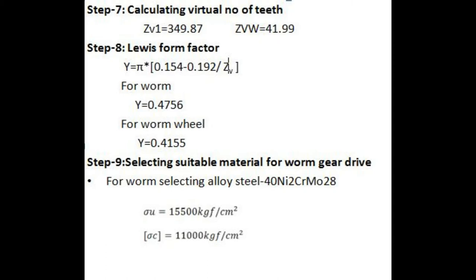Step 7: Calculating virtual number of teeth. The virtual number of teeth Z1 for worm is 349.87 and the virtual number of teeth for worm wheel is 41.99.